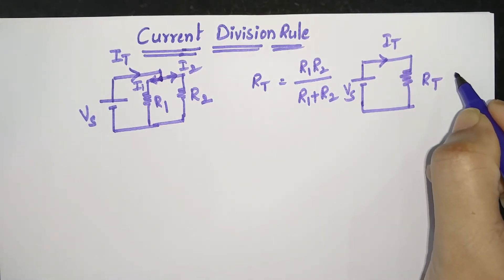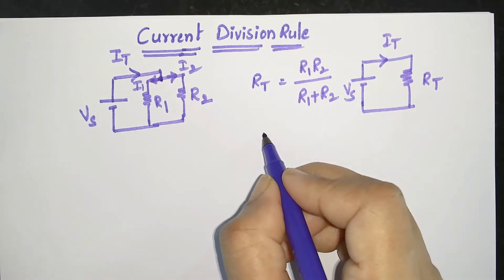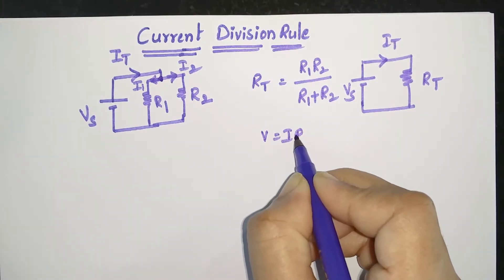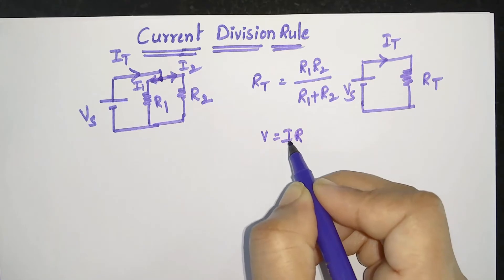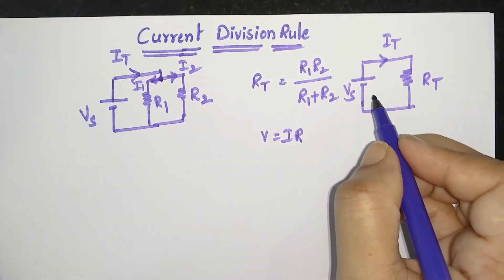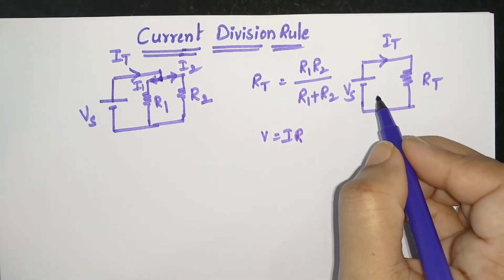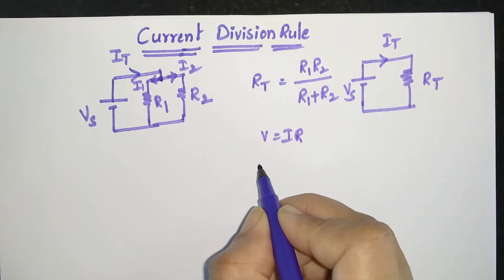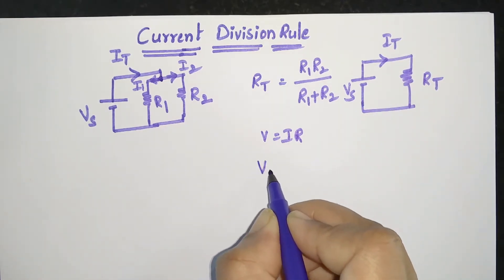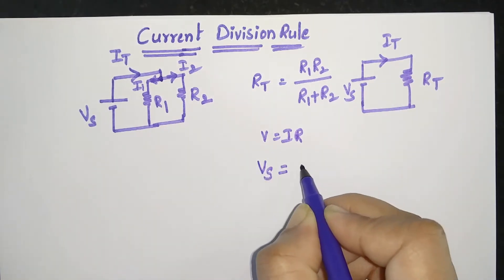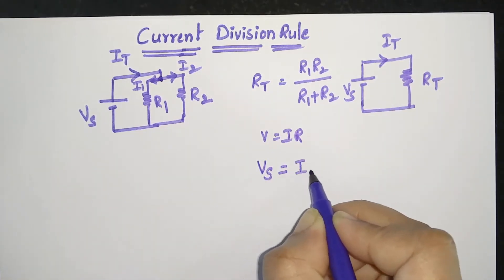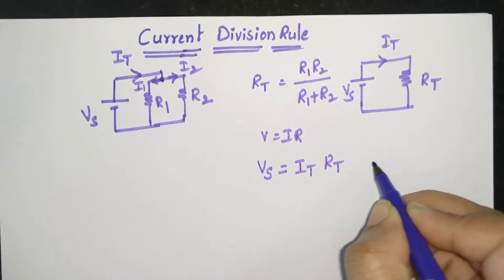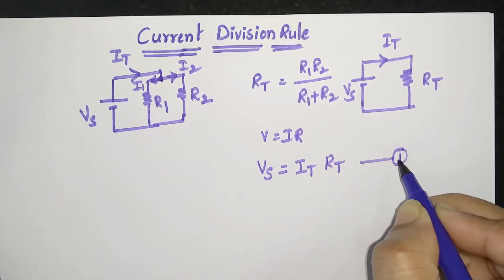According to Ohm's law at constant temperature, V = IR. Applying that same Ohm's law to this simplified circuit: instead of V we have Vs, instead of I we have IT, and instead of R we have RT. So Vs = IT · RT — call this equation 1.